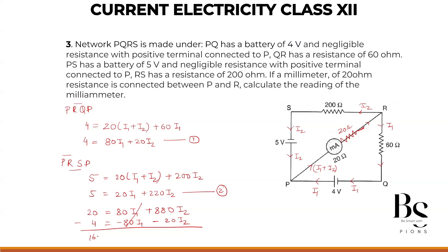20 minus 4 is 16. And this will be 0, 8 minus 2 is 6, 860 I2. So current I2 which is flowing in the circuit is 16 by 860. This is our current I2.